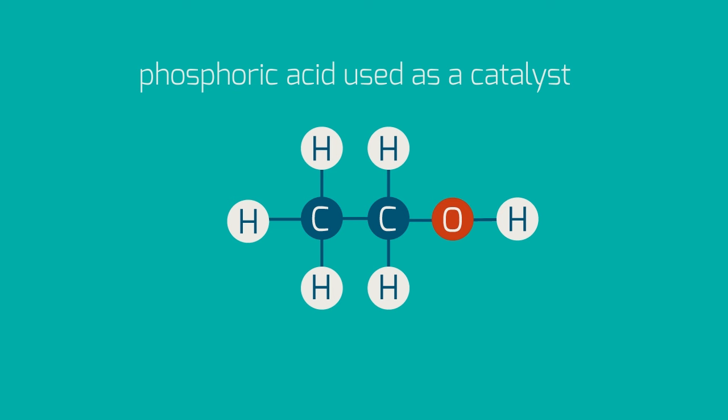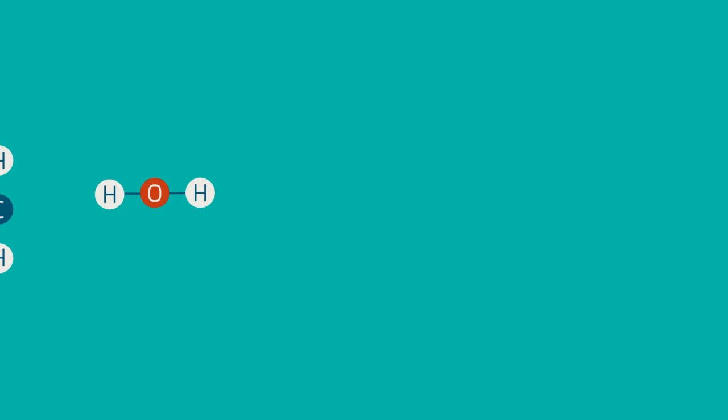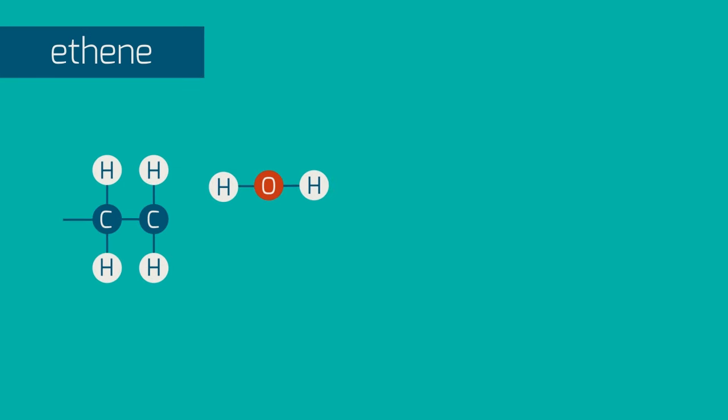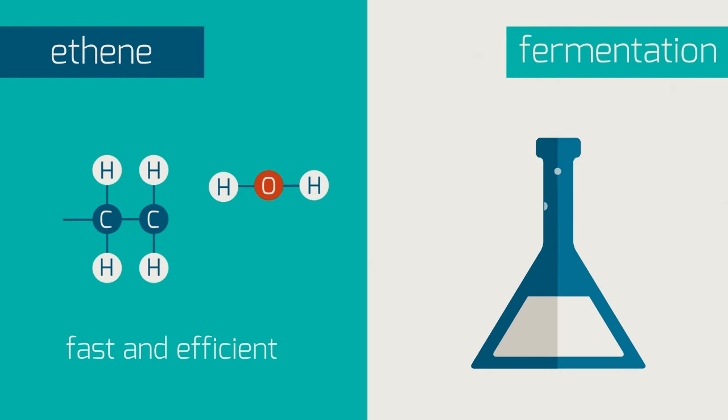Phosphoric acid is used as a catalyst. Note that ethanol is the only product in this reaction. The ethene route is faster and more efficient as there is no waste product formed, only the useful one. Fermentation also yields carbon dioxide, which isn't useful to us.